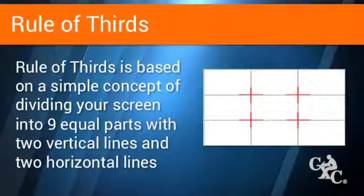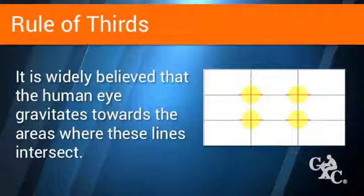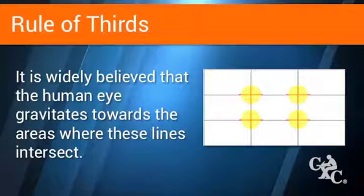Rule of thirds is based on a simple concept of dividing your screen into nine equal parts with two vertical lines and two horizontal lines. It is widely believed that the human eye gravitates towards the areas where these lines intersect. Using the rule of thirds to guide your video or photo shoot can improve your composition and balance.